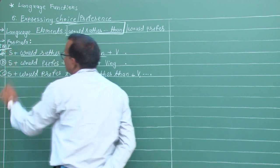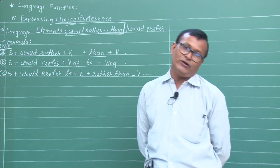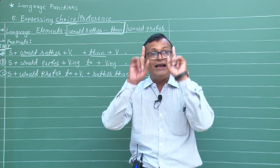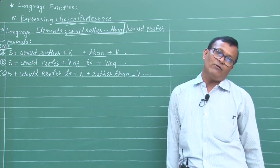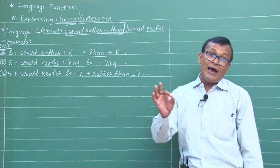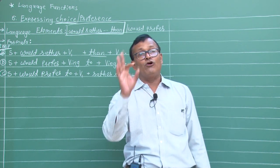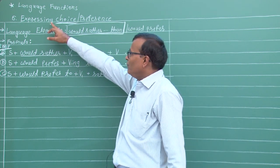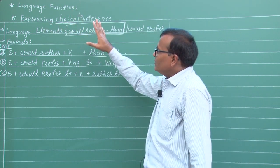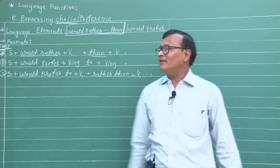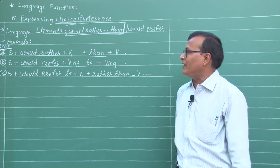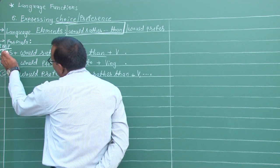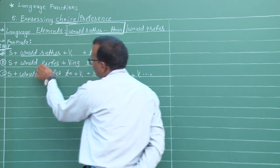આજે આવે છે Expressing Alternative Choice - either or, neither nor - એ અલગ છે, alternate અથવા alternative choice તરીકે વર્ગીકૃત થાય. અહીંયા Offering Choice, Expressing Choice, Making Choice - કોઈ પણ વાત આપવામાં આવે. જ્યારે બે બાબત હોય, તેમાં એક વધારે ઇચ્છા વ્યક્ત કરવા માટે, all language functions નો ઉપયોગ - ખાસ કરીને આ બાબત ધ્યાનમાં લેવાની.